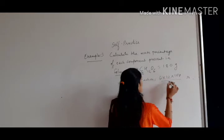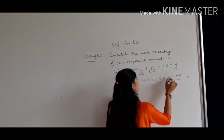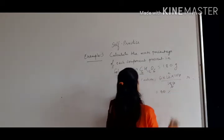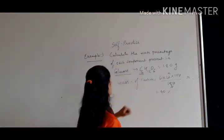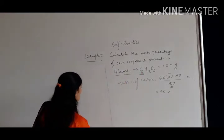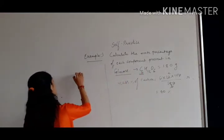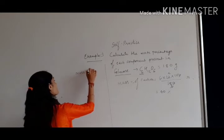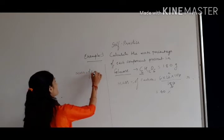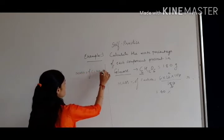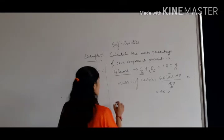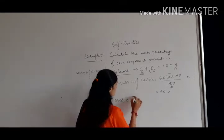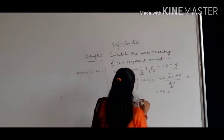So that calculation gives us 720 upon 180, which is equal to 40 percent. So we can say that the mass percentage of carbon in glucose is equal to 40 percent.